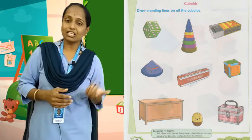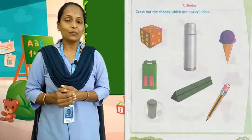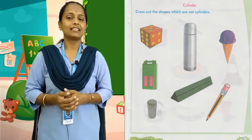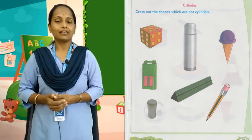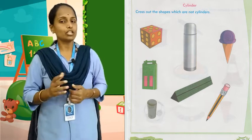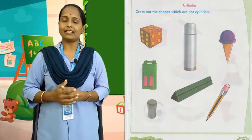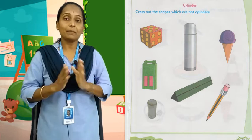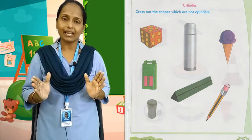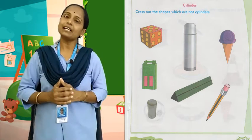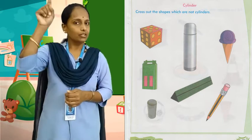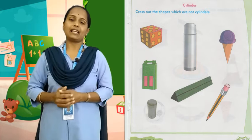वैसे ही, next page देखो — cylinder. Cylinder को क्या करना है? Cross out करना है जो cylinder shape नहीं है, उसका नीचे आपको cross out करना है.